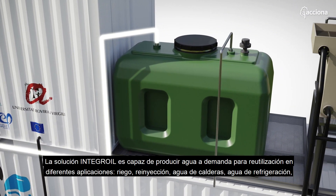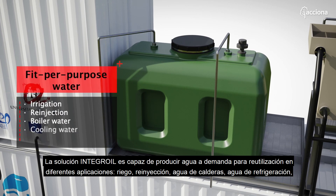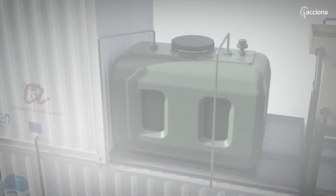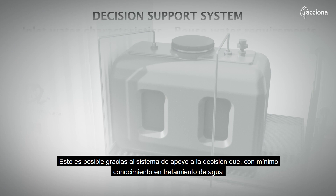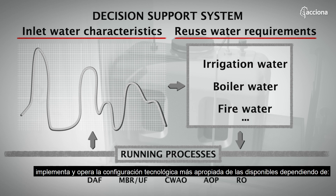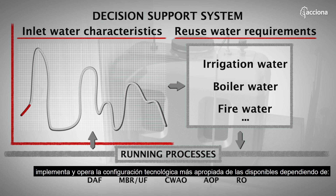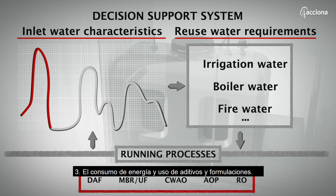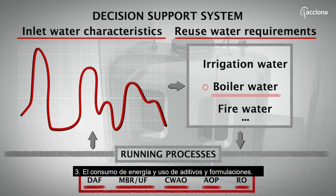The Integroil solution is able to produce fit-for-purpose water for reuse in different applications: irrigation, re-injection, boiler water, and cooling water, according to specific real-time requirements. This is possible thanks to the decision support system that, with minimum water knowledge, implements and operates the most appropriate configuration of individual technologies depending on: one, the quality of the input water; two, the quality of the output water needed for a particular reuse application; and three, energy consumption and use of additives and formulations.